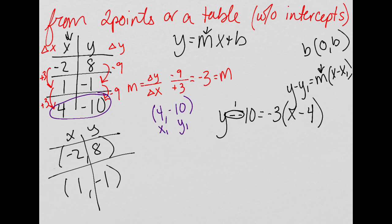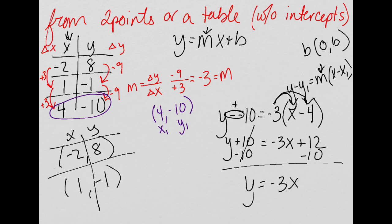Minus a negative is a positive, so I can rewrite that as y plus 10. I'm going to distribute the slope of negative 3, multiplying it in. Negative 3 times x is negative 3x, and negative 3 times negative 4—negative negative is positive, 3 and 4 multiplied to be 12. I'm going to subtract 10 from both sides, and I get y equals negative 3x plus 2, which would be my slope-intercept form with a slope of negative 3 and a b value of 2, or y-intercept of (0, 2).